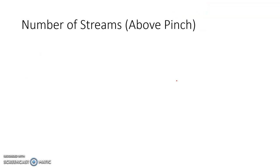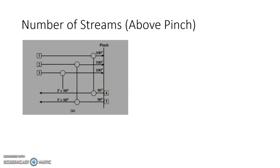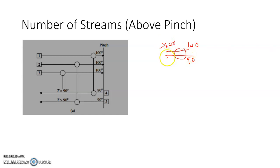Now let us discuss the number of streams requirement above pinch and similarly below pinch. Consider a hypothetical problem with three hot streams and two cold streams. The hot streams have a pinch point of 100°C and cold streams a pinch point of 90°C. If I exchange energy between stream one and stream four, and between stream two and stream five, I still have hot stream three available at 100°C.